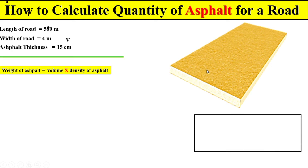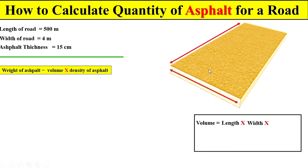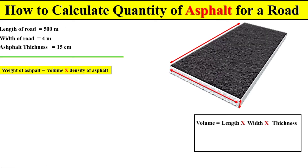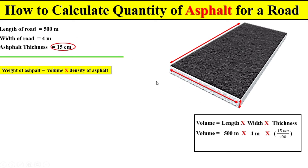The volume of this section will be equal to total length multiplied by total width and then multiplied by total thickness. So the total length of the road is 500 meters, the total width of the road is 4 meters, and the thickness of asphalt is 15 centimeters. We divide the thickness by 100 to convert it into meters, because the length and width of the road are already in meters.